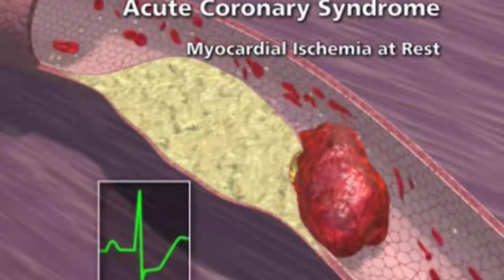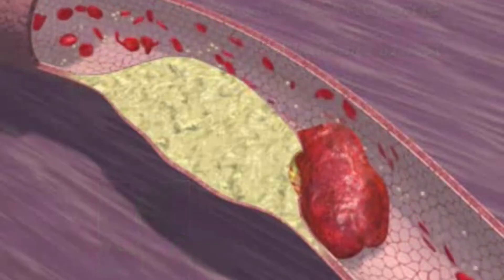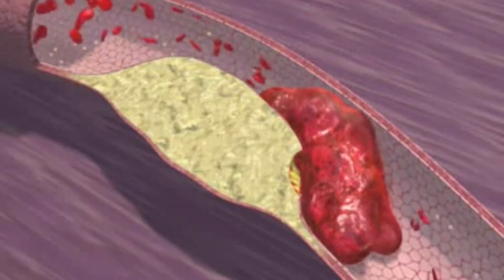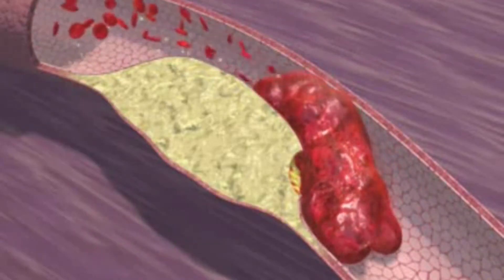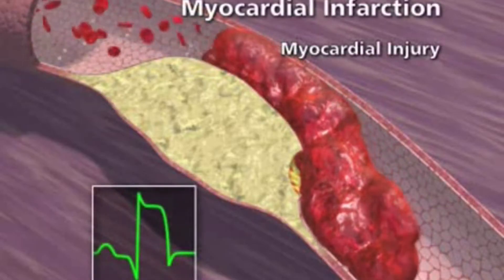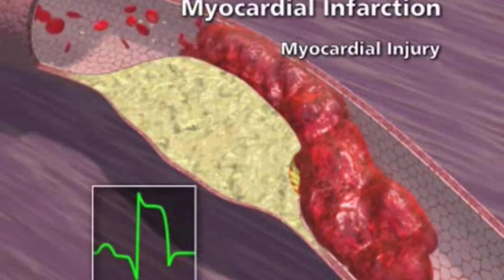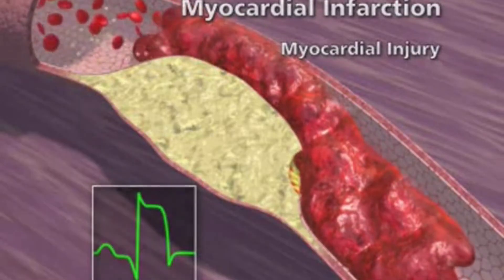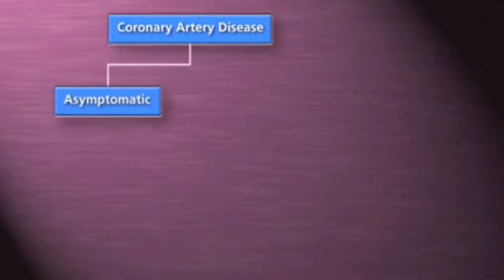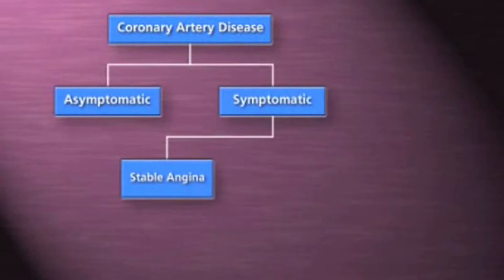In contrast, when the thrombus completely occludes the vessel, the myocardium is injured and the syndrome of ST segment elevation myocardial infarction develops. In summary, patients with coronary artery disease may be asymptomatic, they can have stable angina, or they can suffer an acute atherothrombotic event.